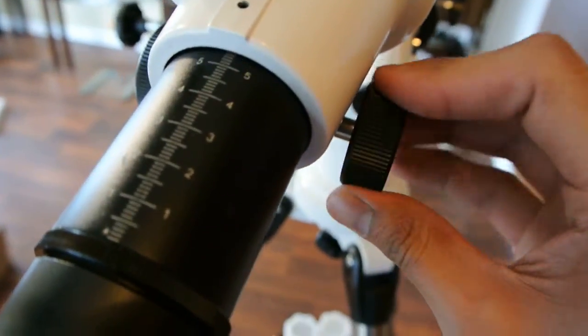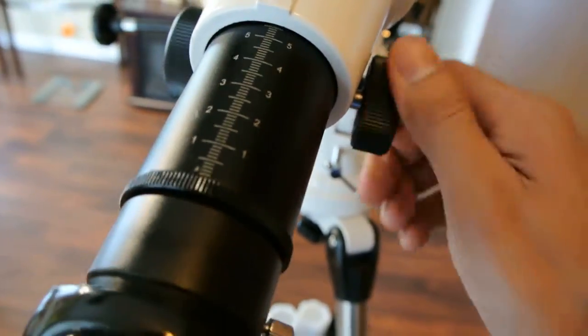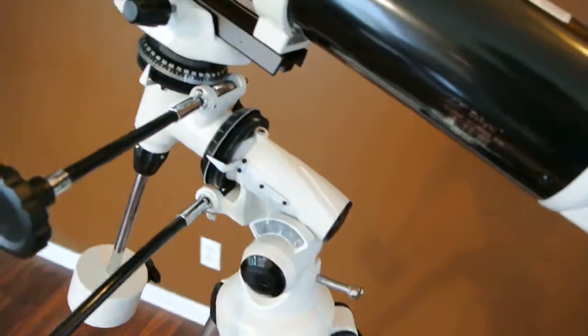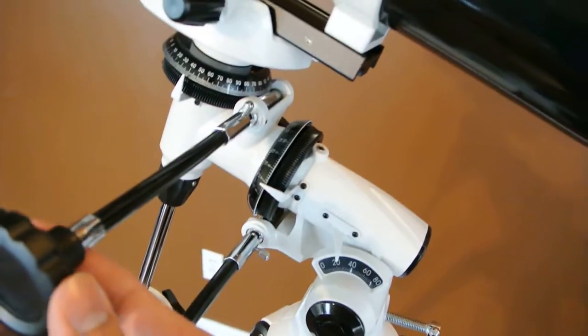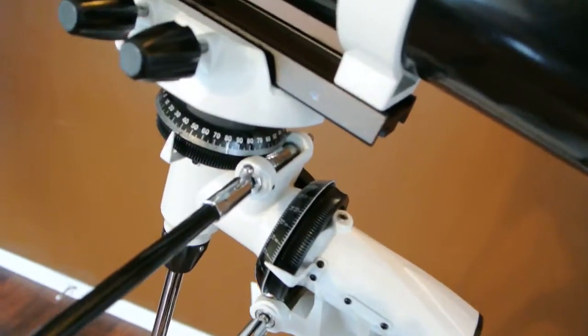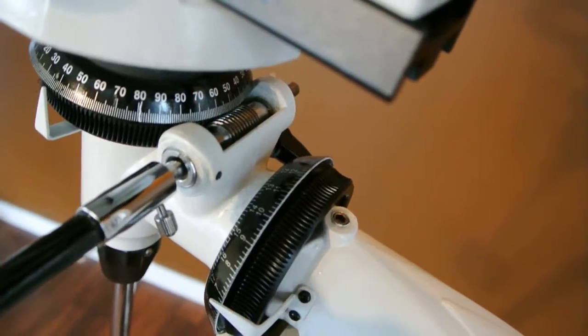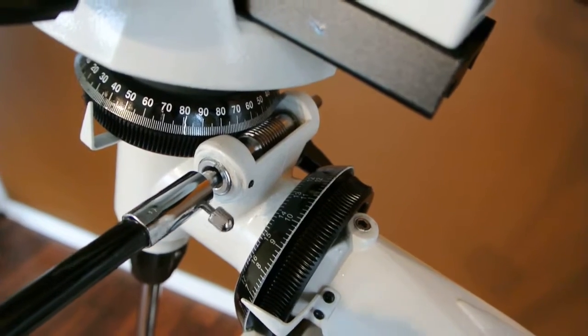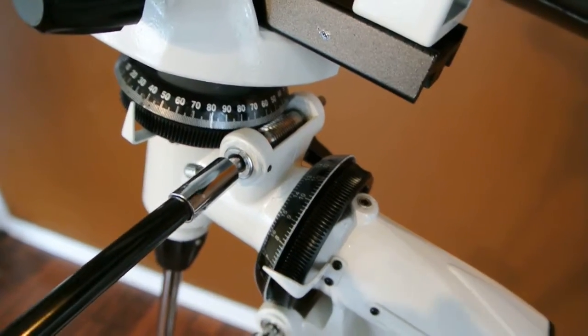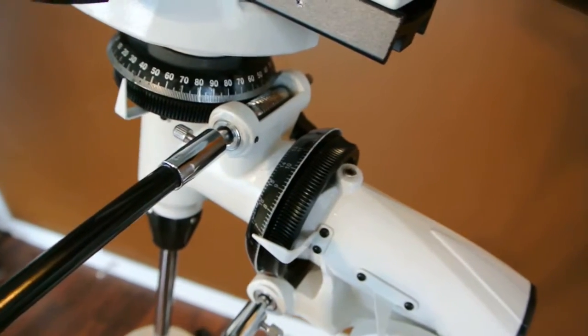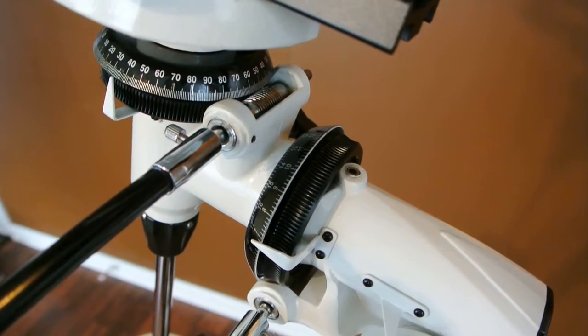Here on the side we have the focuser that is adjusted like this. And we also have the slow turning knobs for focusing the x and the y axis. You simply turn them and it allows you to turn the telescope up and down or left and right. You use these after you find whatever you're looking at and you want to do some more precision movements without moving it too much.